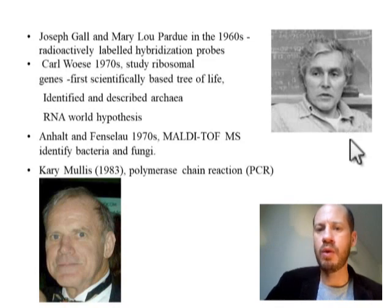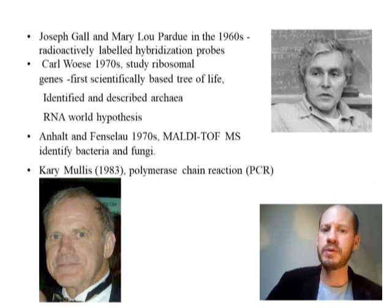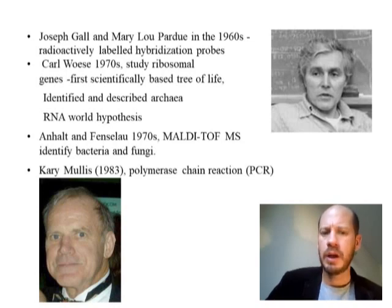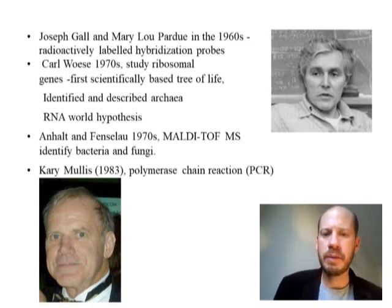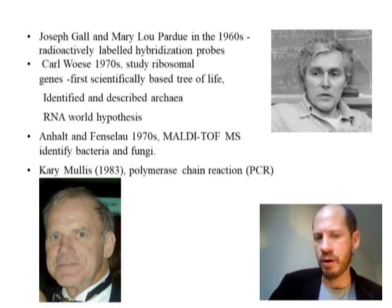Carl Woese, shown in the photo on the right, studied ribosomal genes and proposed the use of ribosomal DNA to build the tree of life as we use it today with ribosomal RNA. He also proposed the separation of prokaryotes into bacteria and archaea — archaea had not been well recognized as an individual group. By studying RNA from archaea, he identified that archaea were very different from bacteria. He controversially also proposed the RNA world hypothesis for early life on Earth, where organisms were based on RNA before they developed DNA.